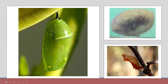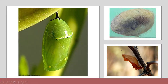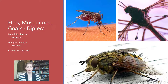Their pupae are also unique and different. The monarch chrysalis, kind of shiny and looks like it's wet, is very memorable. Some look like they've wrapped grass and debris around themselves. This appears to be a swallowtail pupa — probably many of you have seen that cocoon before. Flies, mosquitoes, and gnats are in the order Diptera.